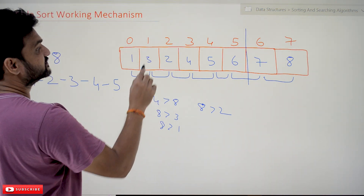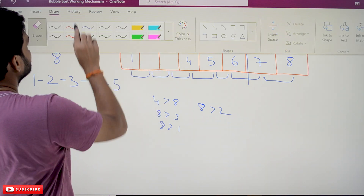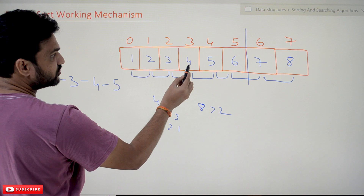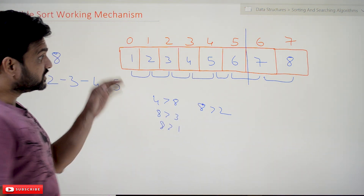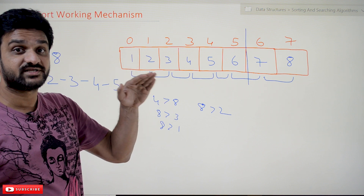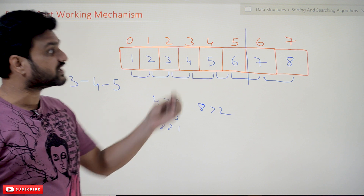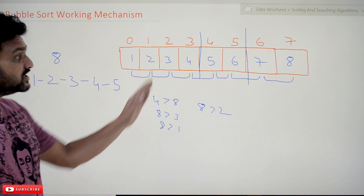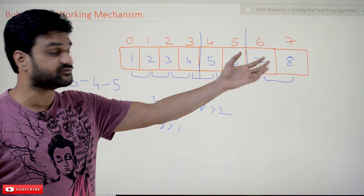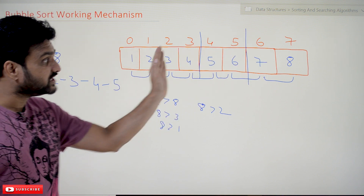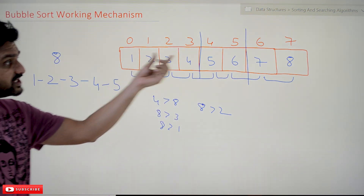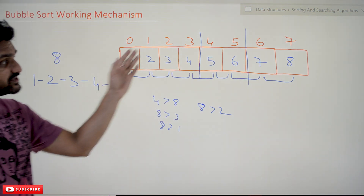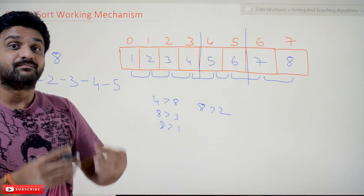In the fifth iteration: 1 greater than 3? No. 3 greater than 2? Yes — swapping is needed; 2 and 3 are swapped. The remaining comparisons are not required. Even though they are not required, the iterations are still done. The important point to understand is: even though all elements are in sorted order after the fifth iteration, the original bubble sort algorithm is written such that all iterations must still be completed.